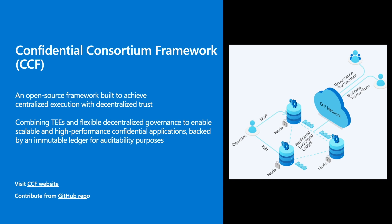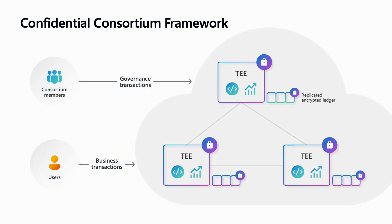CCF executes centrally with decentralized trust, making it more efficient and sustainable compared to other traditional solutions. A simplified view of the CCF network shows an operator who maintains the nodes outside the trust boundary, a consortium of members who govern the network, and users making business transactions. A basic CCF network is made of three nodes, and all nodes run the same application inside the trusted execution environment.